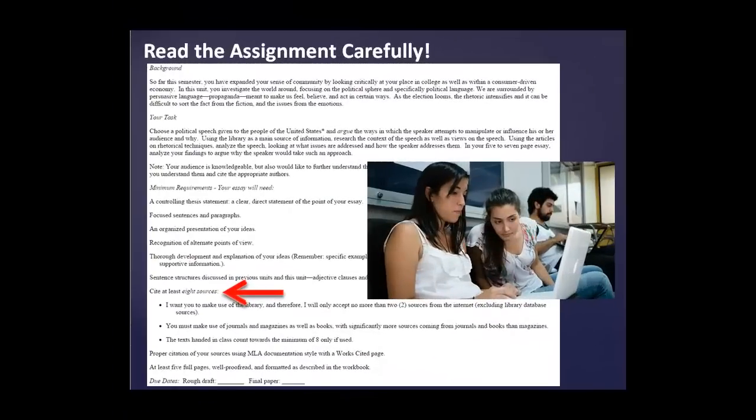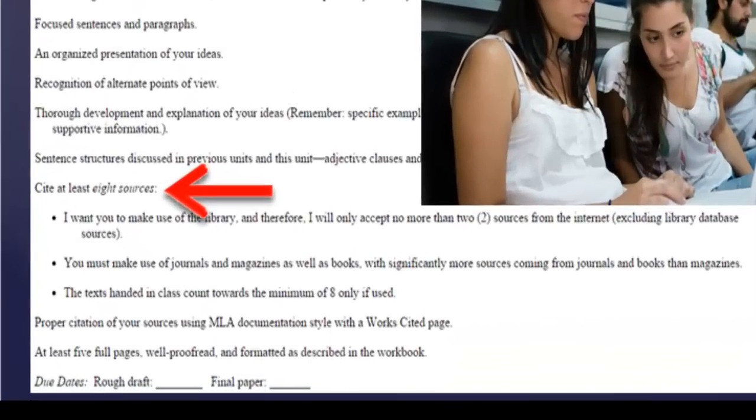The best place to start with determining what kind of information you will need is with your assignment instructions. You may have received a copy of the assignment in class, or it may be available on your course's Blackboard site. Read through the assignment several times to make sure you understand what you are expected to do. The type of information you need will depend on the specific problem or assignment you've been given. As you read through your assignment, consider the following questions to determine the information and research requirements.